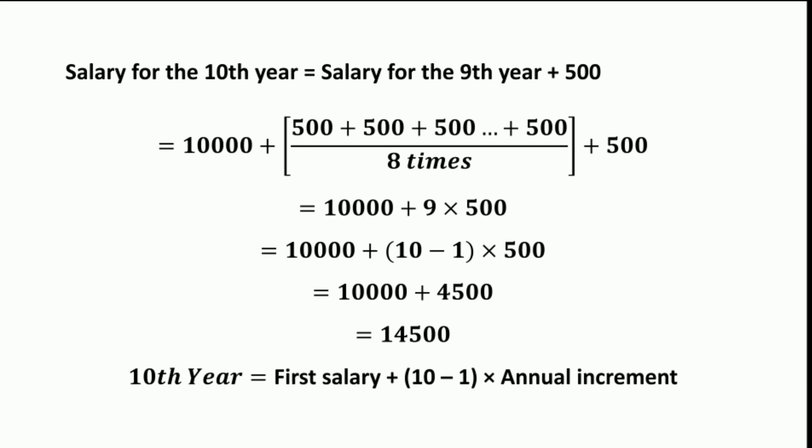In this example, we can observe that we are getting a list of numbers: first year it is 10,000, 2nd year it is 10,500, 3rd year it is 11,000, 4th year it is 11,500, then 13,000, 13,500 and so on. Of course, these numbers are in arithmetic progression.